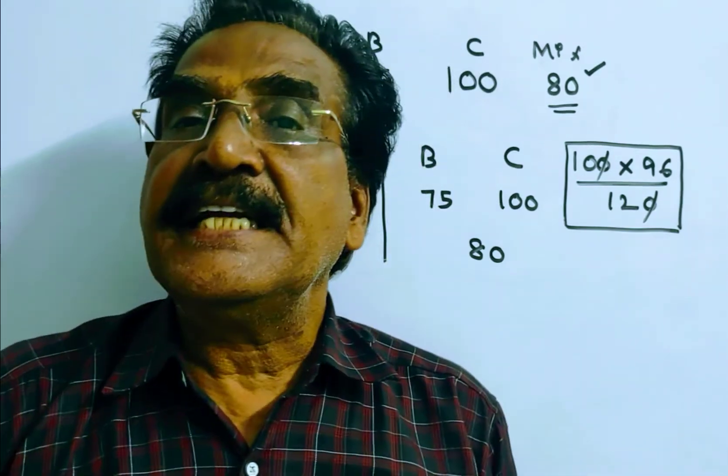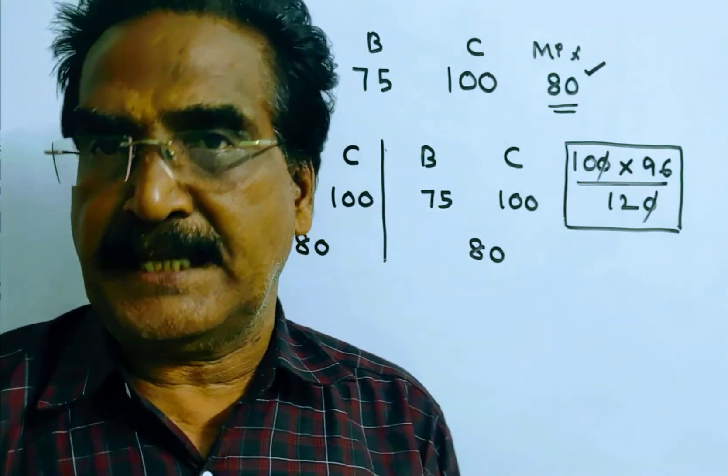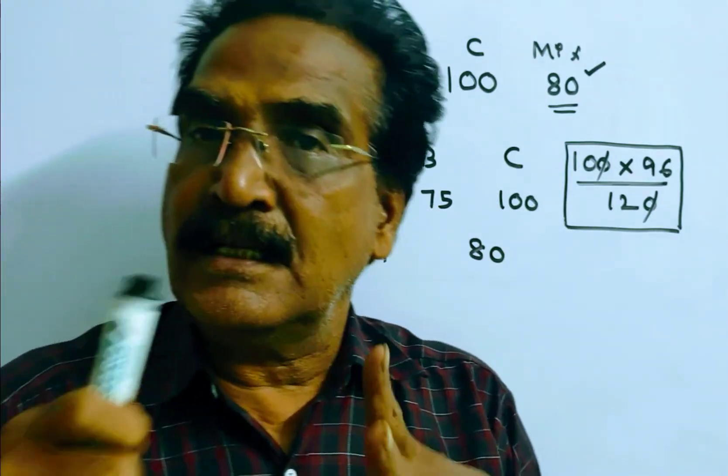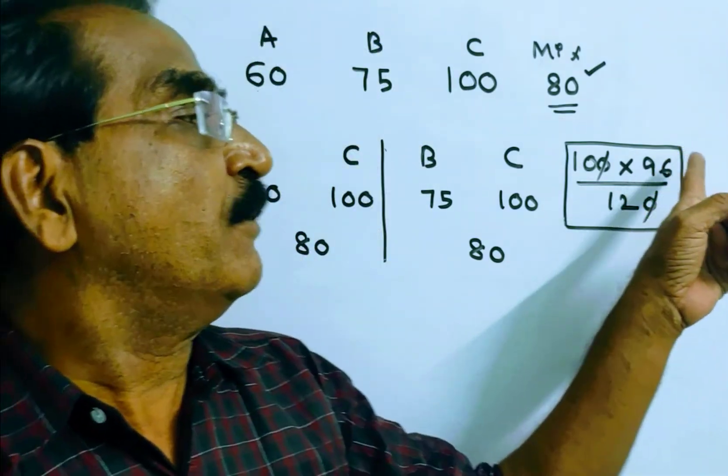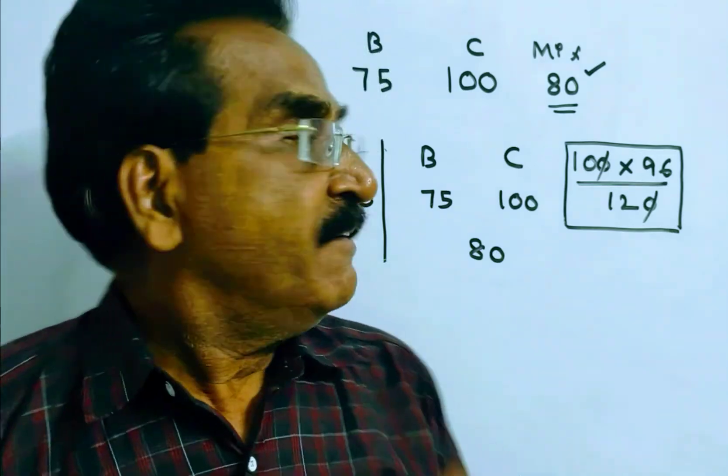Here, three types of tea costing 60 rupees a kg, 75 rupees a kg, and 100 rupees a kg are mixed, and the mixture is sold for 96 rupees a kg at a profit of 20%.